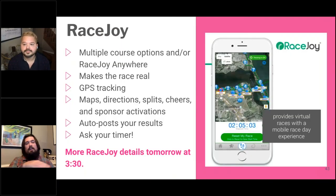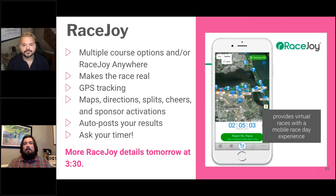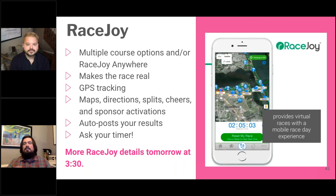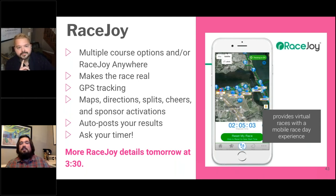RaceJoy is a great app to include in your virtual event. It supports multiple courses or a 'Run Anywhere' option. Participants can use local parks or private land for designated courses. The app adds sponsor opportunities, social cheering, and GPS tracking so it feels like a real course. If running anywhere, participants hit start, run their neighborhood, and once they reach the set distance, their time automatically uploads to the leaderboard. Ask your timer about RaceJoy for more details.